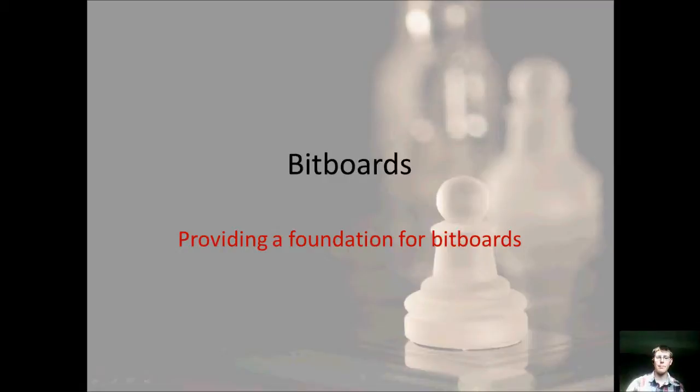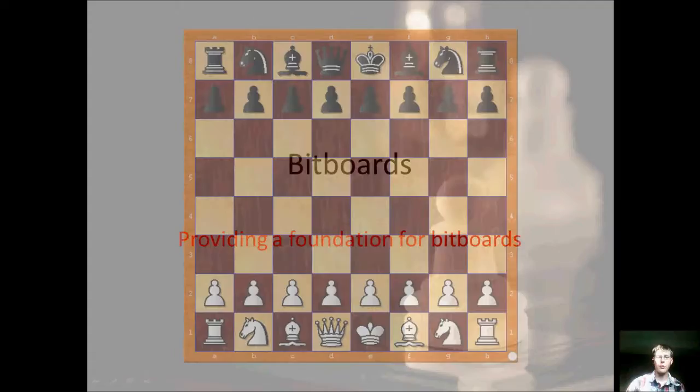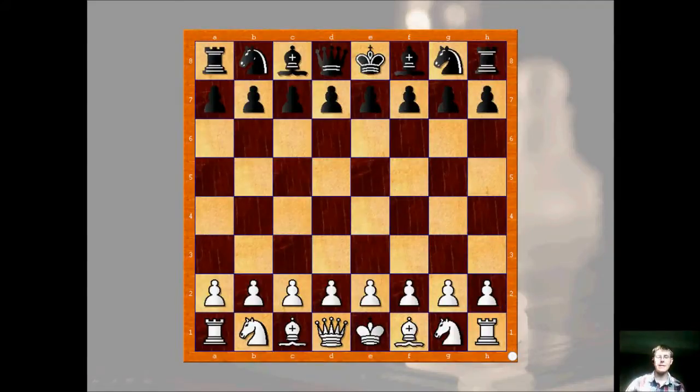So basically a bitboard is a way of representing the board on a computer. You'll remember that on our last simple chess engine tutorials we represented the board by an array, an 8x8 array, and a lowercase r would be a black rook and an uppercase r would be a white rook, a lowercase q would be a black queen and an uppercase p would be a white pawn and so on.